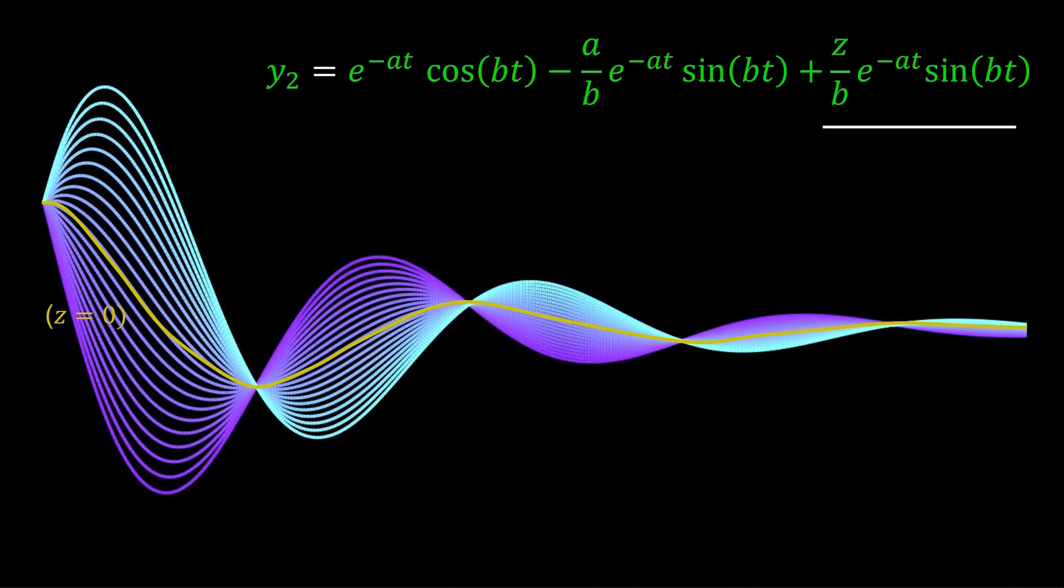With the zero in the right half plane, Z is less than zero. So, the third term is subtracted from the transient response.